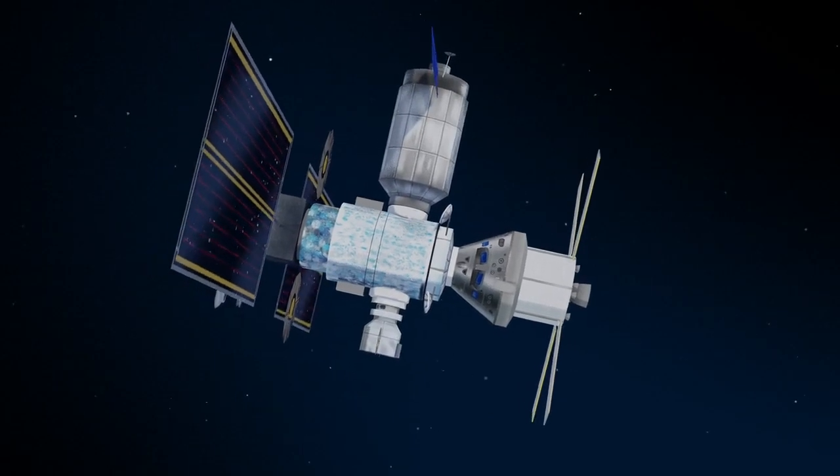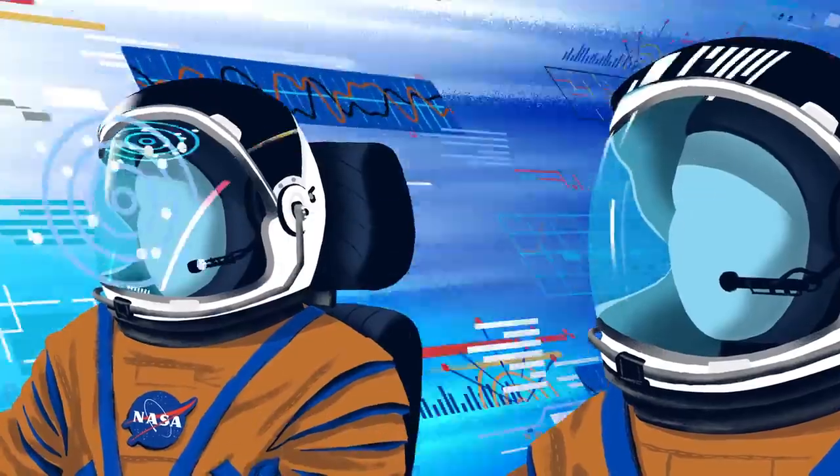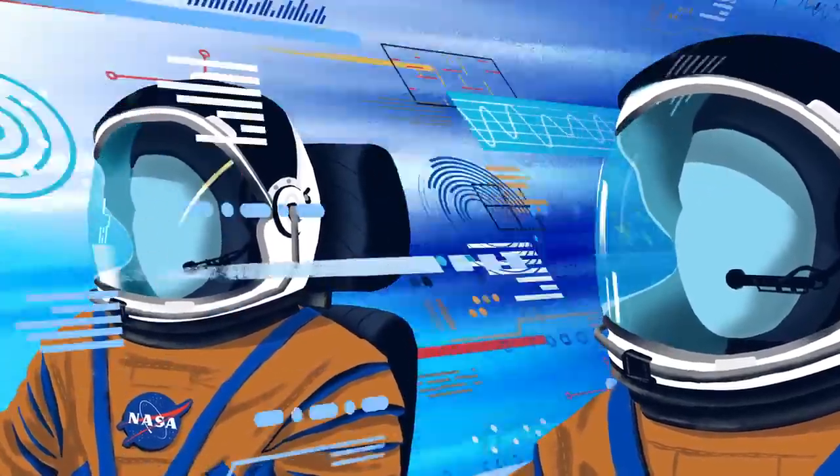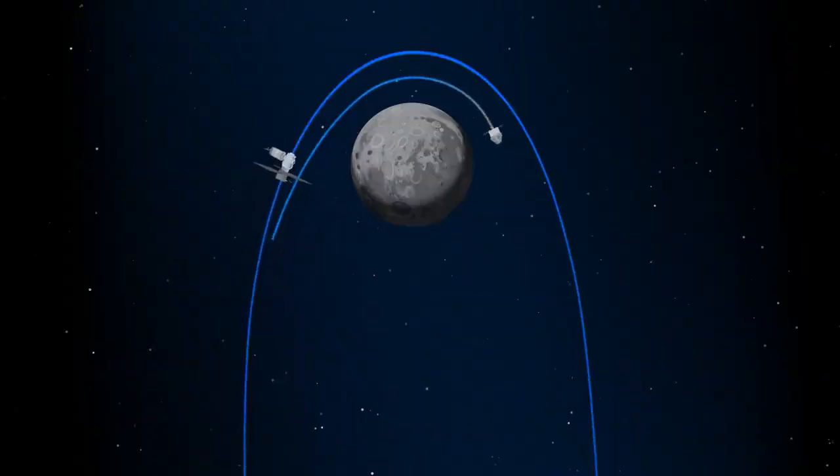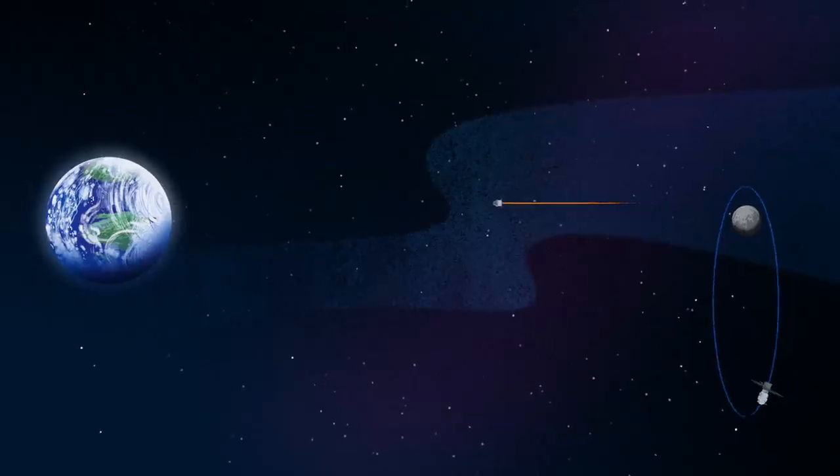Once back aboard the Orion spacecraft and undocked from Gateway, the crew fire their engine once to break out of the halo orbit, and once again to sling the spacecraft around the Moon, placing it on a multi-day trajectory back towards Earth.